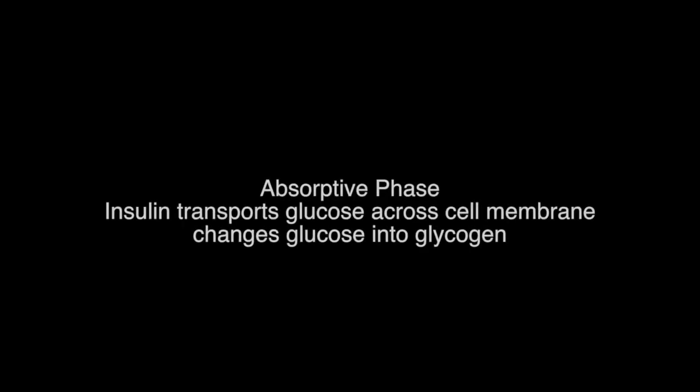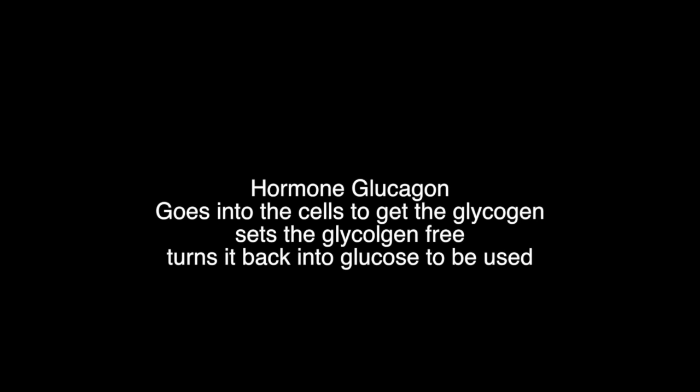Let's recap the entire process. During a meal, we have too much glucose and the pancreas puts a stop to this — it sends out insulin, takes that glucose, transports it across the cell to be saved for later, and changes it into glycogen, stored in the liver and muscles. When we need to use it, the hormone glucagon goes into the cells, especially the liver, gets that glycogen, brings it back out across the cell membrane, and turns it back into glucose where we can use it.